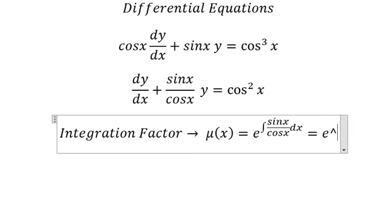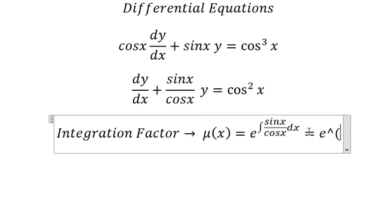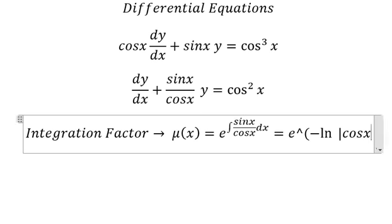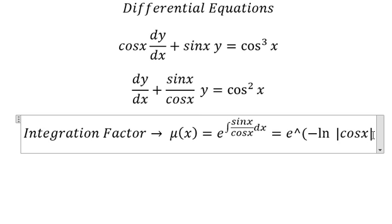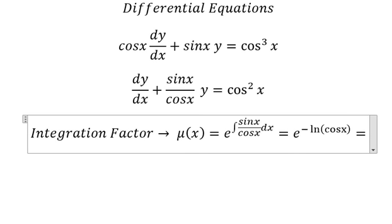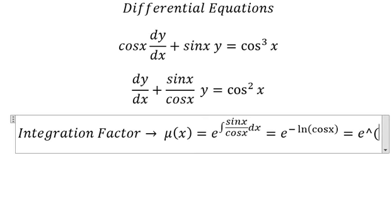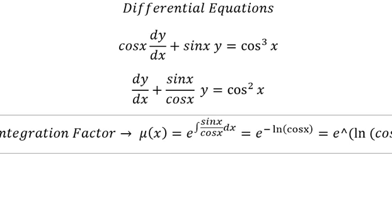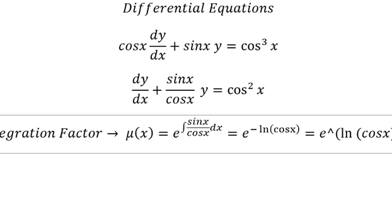And we get e to the power of negative ln of the absolute value of cosine x. But in this situation, we just use cosine x and we get e to the power of ln of cosine x to the power of negative one.